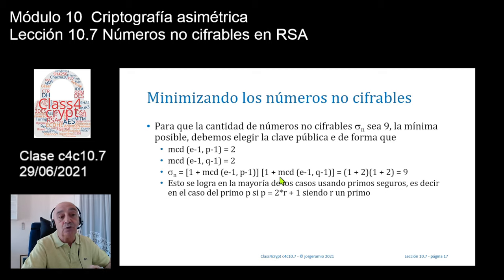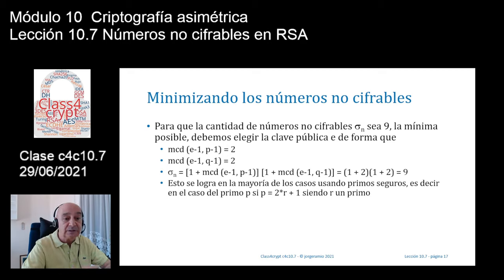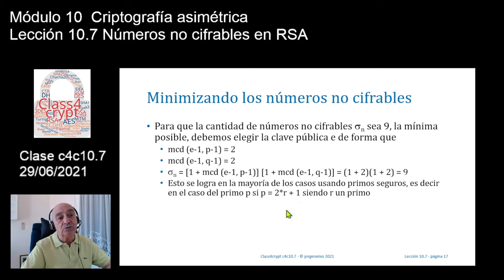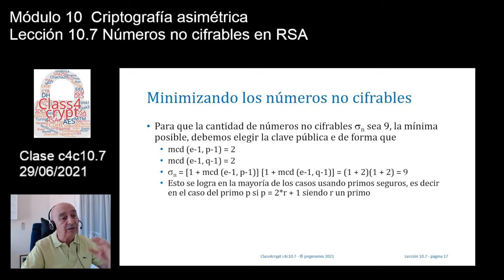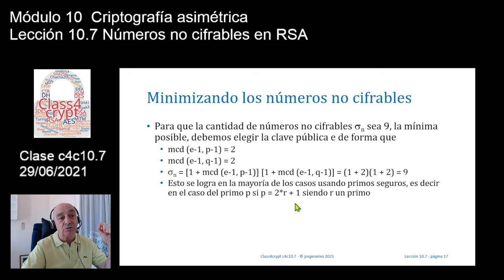Hay una gran cantidad de tipos de primos: primos seguros, primos fuertes, primos de Mersenne, sexy primes, twin primes o primos gemelos. Los primos seguros son muy interesantes en criptografía. Hay una diferencia entre que esto sea académicamente interesante y que software básico como OpenSSL no utilice por defecto primos seguros al generar claves RSA.